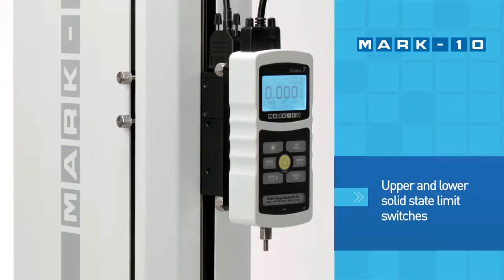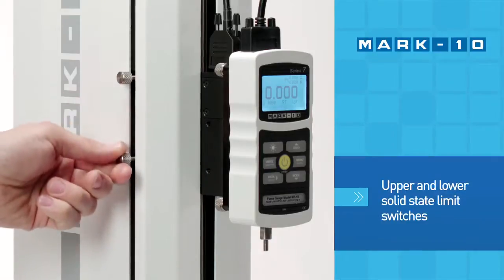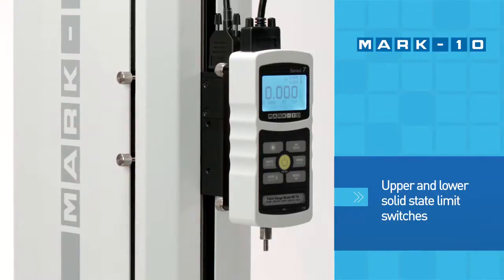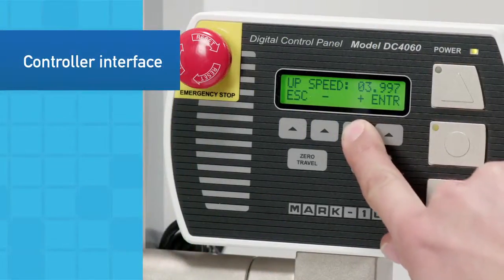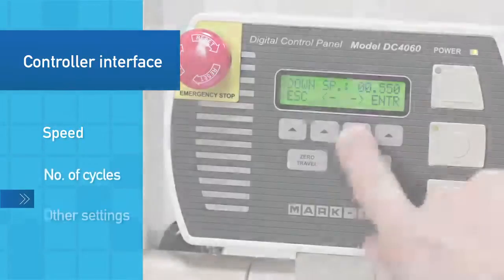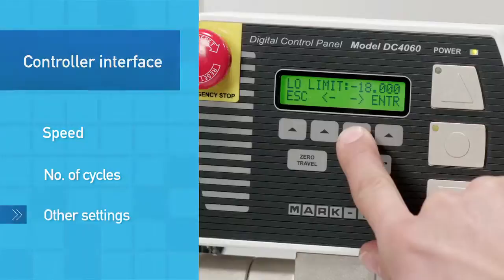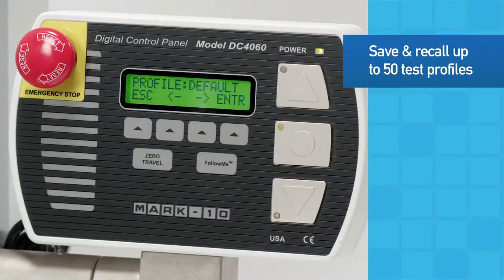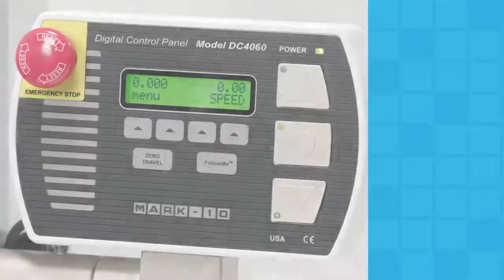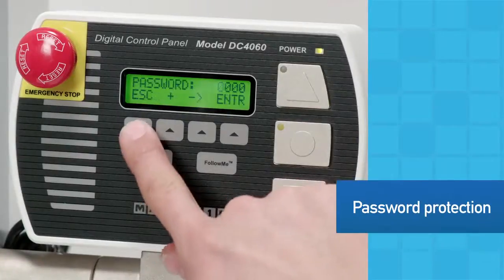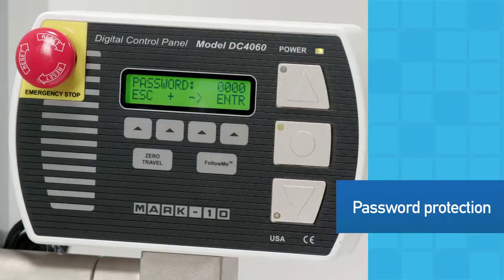Upper and lower solid state limit switches can be positioned to prevent over-travel or as a test-end condition. Utilizing the simple control panel interface, set up test parameters such as speed, number of cycles, and other settings. Save and recall up to 50 test profiles to accommodate a variety of test methods. Password protect the menu to prevent unauthorized changes.